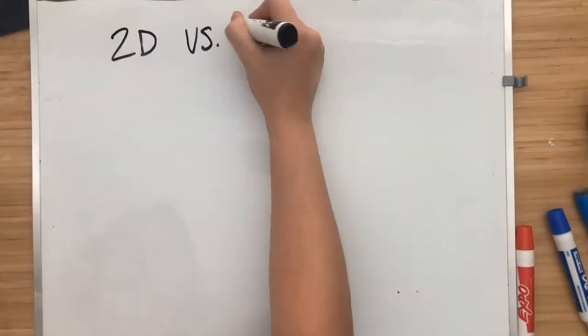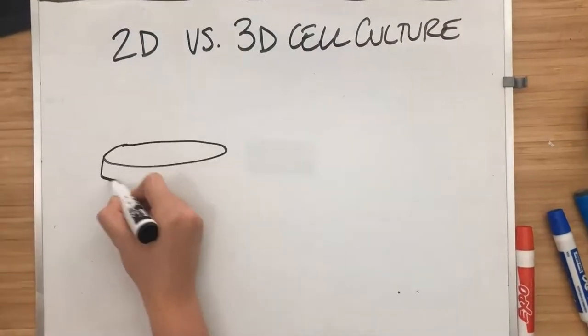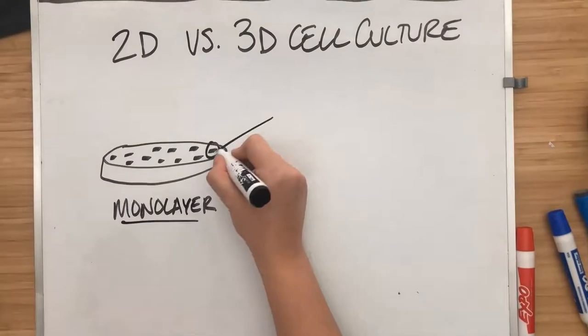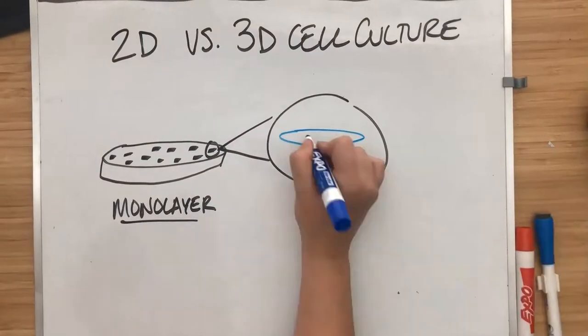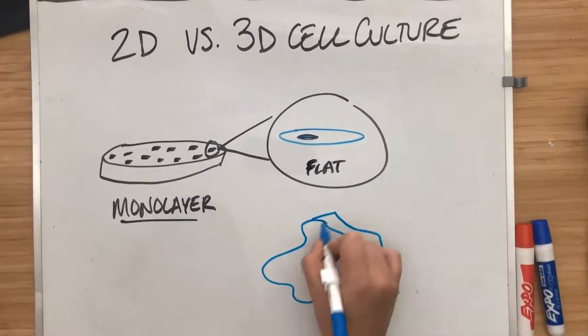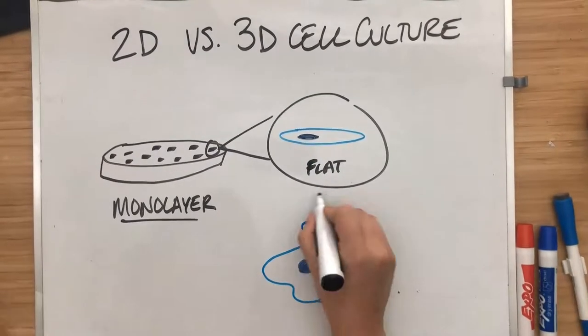This is similar to comparing 2D versus 3D cell culture. In 2D culture, we grow cells in a dish or a flask, and those form a single monolayer. If we looked at one of those cells, we'd see that they actually grow flat, which is different from how they grow in human tissue, where they have some more dimension to them.